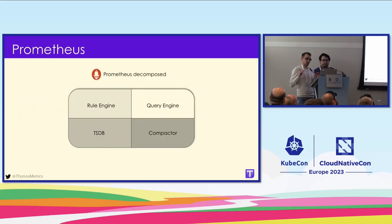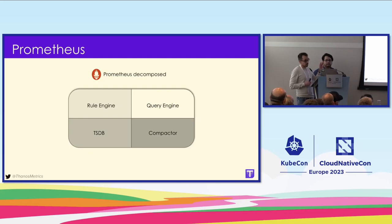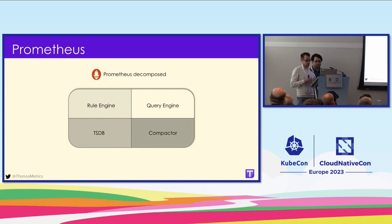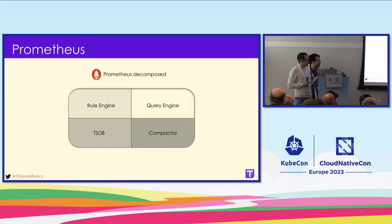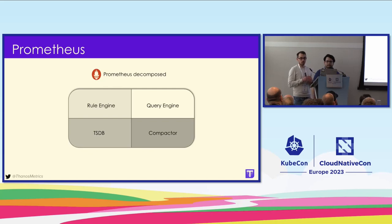Prometheus also has a very flexible query language which we call PromQL. Using that query language, we can also write alerts, which means we can have alerts that are constantly executed and let us know when something goes wrong — for example, when a threshold is violated, Prometheus can fire an alert.